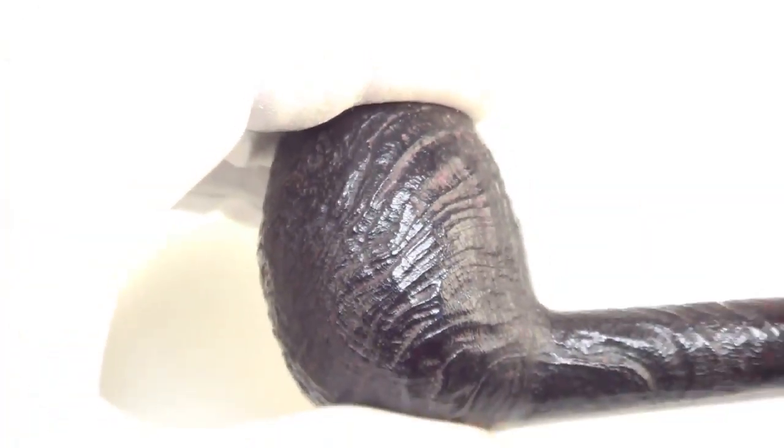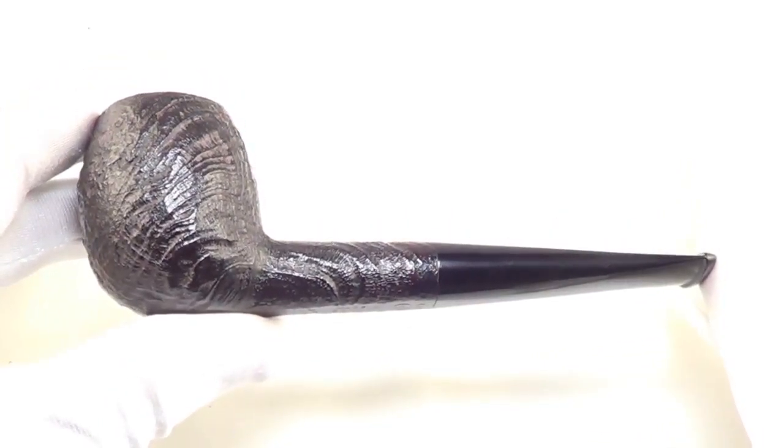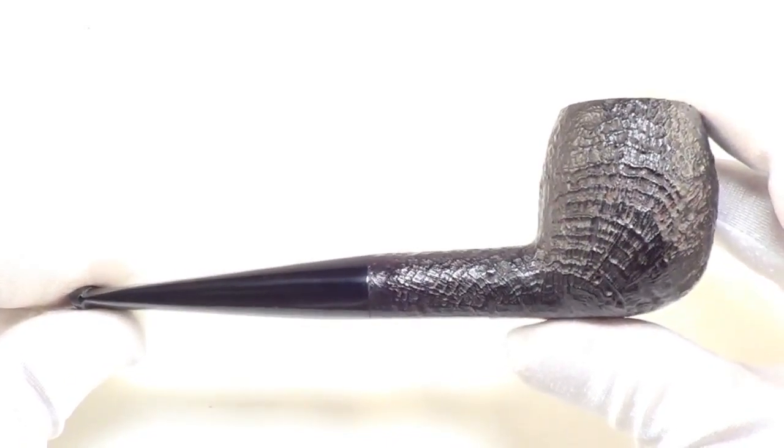The rim is char-free and the walls are nice and thick. The stem has motif marks on the top and an open stem tip.